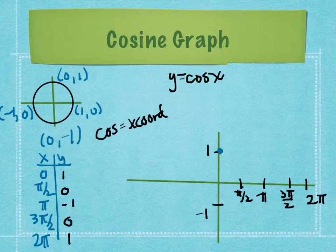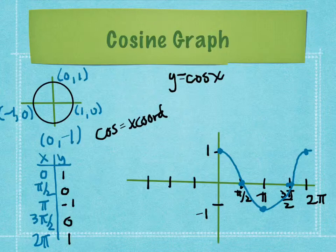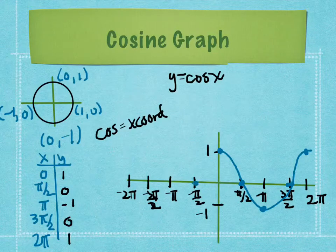Plotting the points: starting at (0,1) up at value 1, then down to 0 at the x-axis, down to -1, back up to 0, and back up to 1. Connecting these gives the cosine curve for one period. We create the same image on the left-hand side using -2π, -3π/2, -π, and -π/2, and we end up with the cosine curve over two periods.